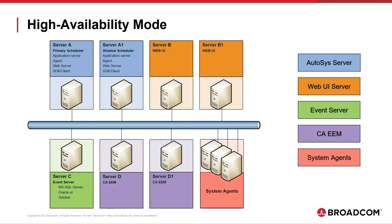The following is the High Availability mode topology. In this topology, each of the Autosys components is duplicated for redundancy. We have two Autosys servers: the Primary Scheduler and the Shadow Scheduler. In case of primary server failure, the Shadow Scheduler takes control. Web UI can be installed in high availability mode. Under this configuration, the Web UI instances in a high availability group share the Web UI and reporting databases and use a common instance of CAEM.